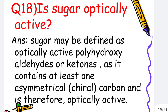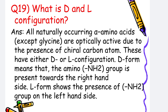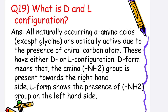Is sugar optically active? Sugar may be defined as optically active polyhydroxy aldehydes or ketones, as it contains at least one asymmetrical carbon and is therefore optically active. What is D and L configuration? All naturally occurring alpha amino acids are optically active due to the presence of chiral carbon atoms and have either D or L configuration.